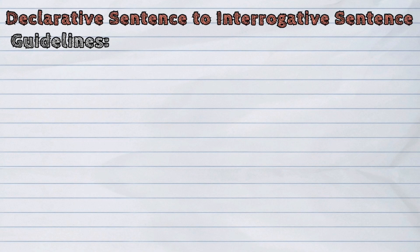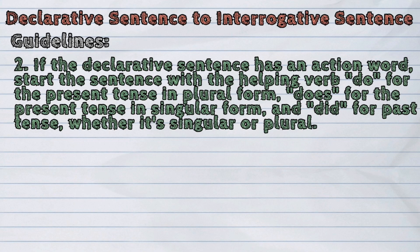Let us discuss the second guideline. If the declarative sentence has an action word, start the sentence with a helping verb: 'do' for the present tense in plural form, 'does' for the present tense in singular form, and 'did' for the past tense whether it's singular or plural. Then copy the rest of the sentence.